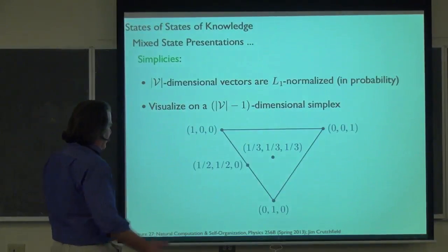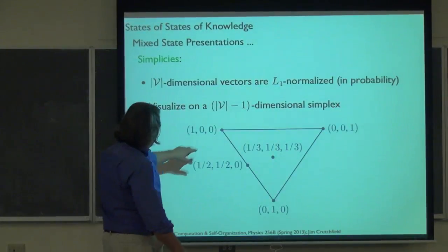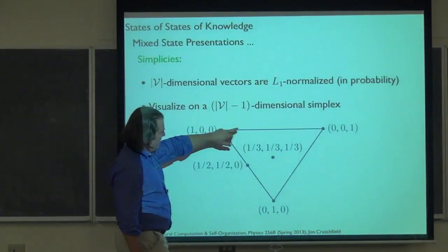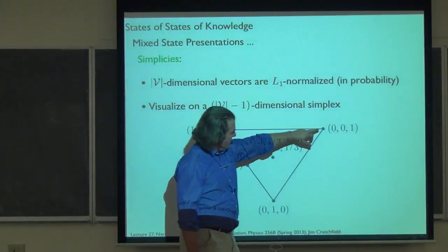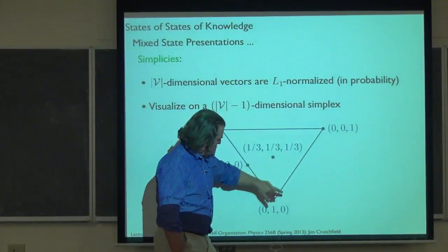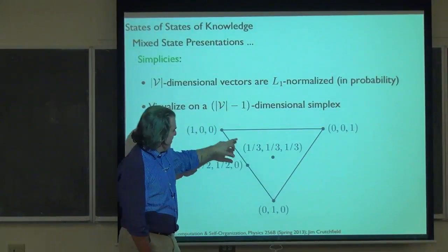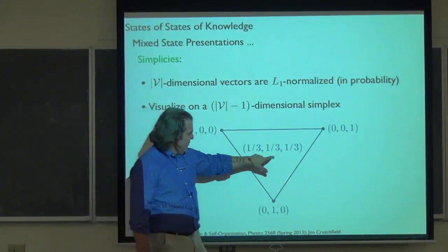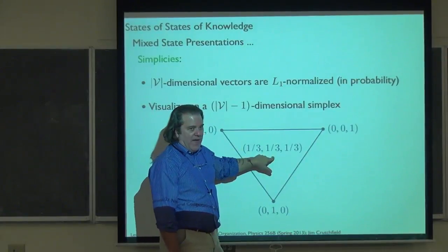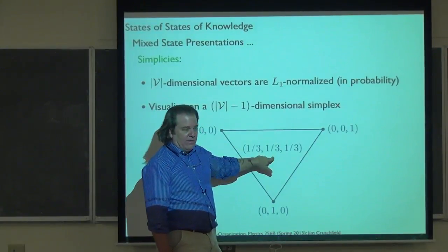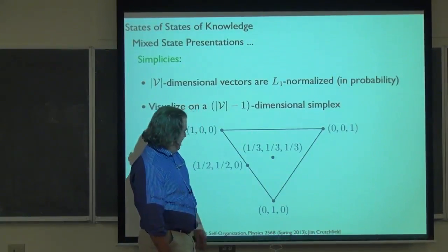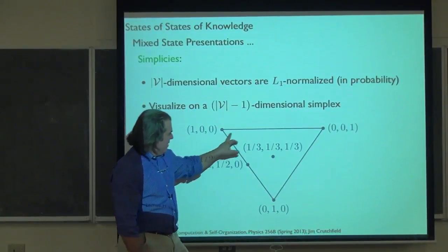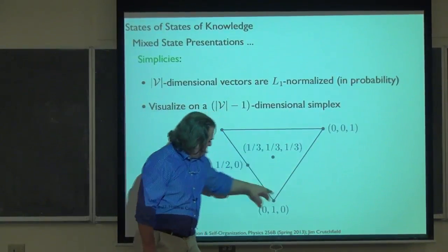Over the simplex surface, there are notable points. The vertices are the delta function distributions — we know exactly what state we're in. The center point is always the state of maximum uncertainty.